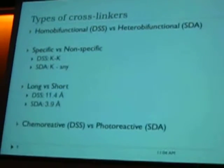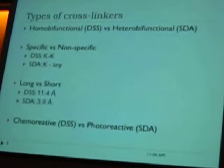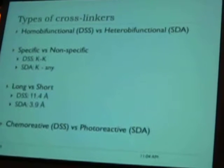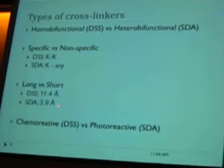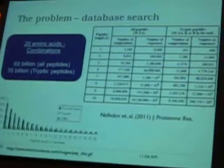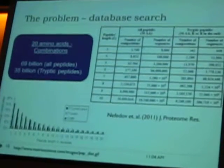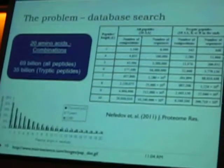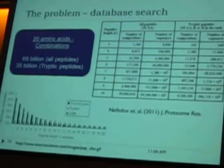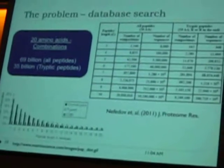It's mainly because of the fact that non-specific cross-linkers exist — we don't know the detail, it can bind to any of the 20 amino acids. We have database search methods available when dealing with conventional mass spectrometry of proteins. We have a database of all the proteins, and when we get the mass spectra, we compare it to the database, and when we find a match, we get the score, and we are done.